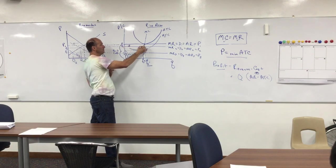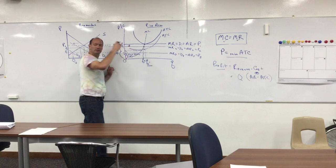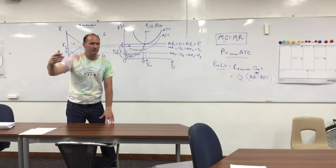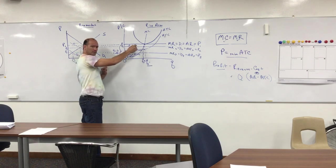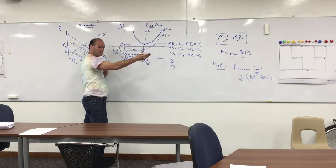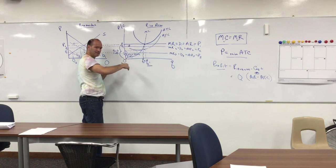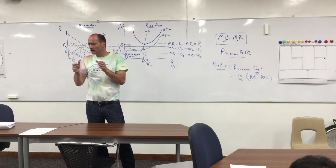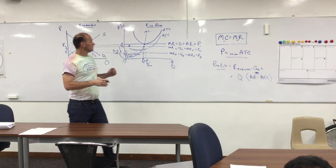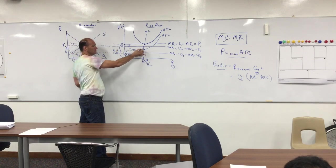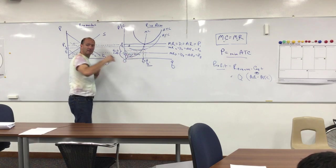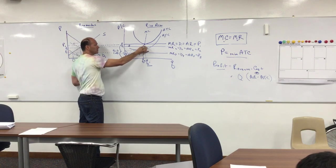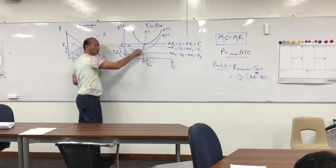In this range — when price is above the minimum of average variable cost but below the minimum of average total cost — the firm will produce in order to minimize its loss. He still won't cover both his fixed and variable costs, but he covers the variable costs. Therefore, if price is greater than the minimum of average variable cost, the farmer should produce to the point where marginal cost equals marginal revenue in order to minimize his loss.